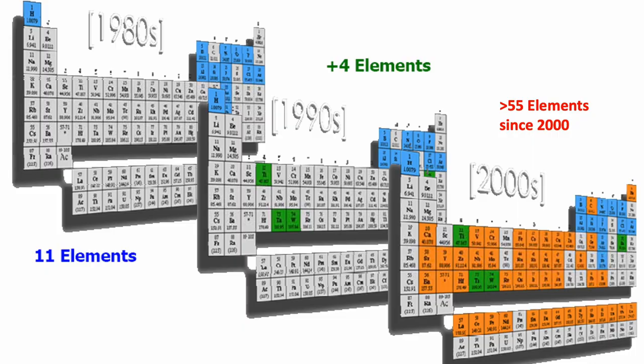A single microprocessor now includes more transistors than the total number of people on Earth. As devices got smaller, many materials reached their scaling limit by the late 90s, and new materials had to be designed and developed. I have measured nearly 80 of the 92 naturally occurring elements.